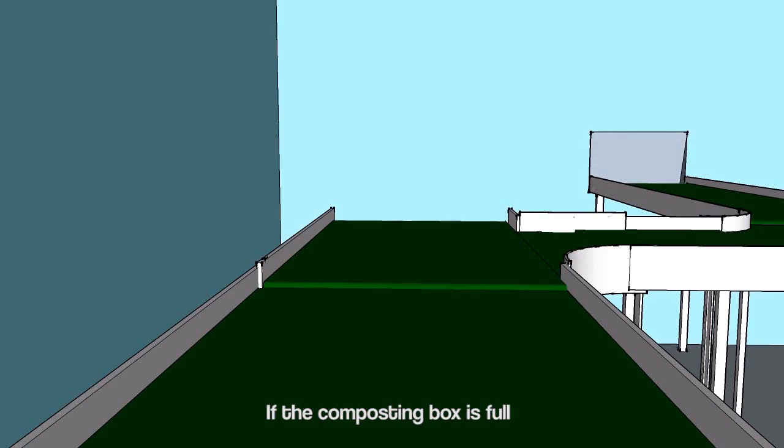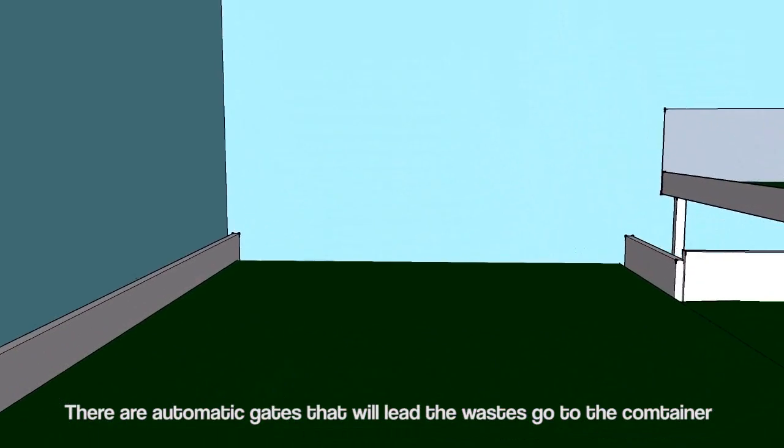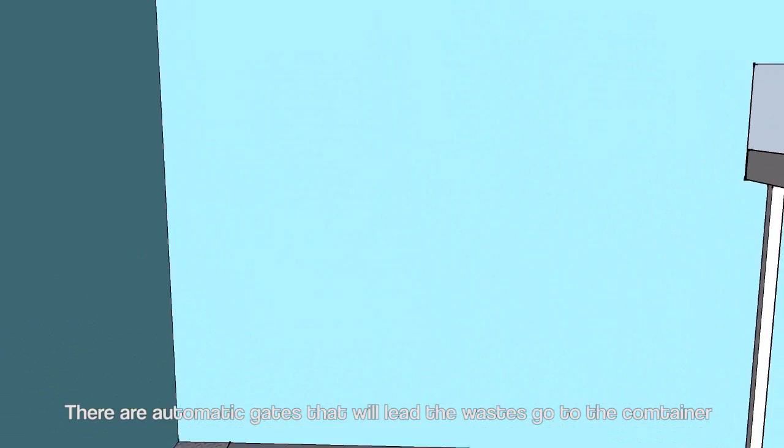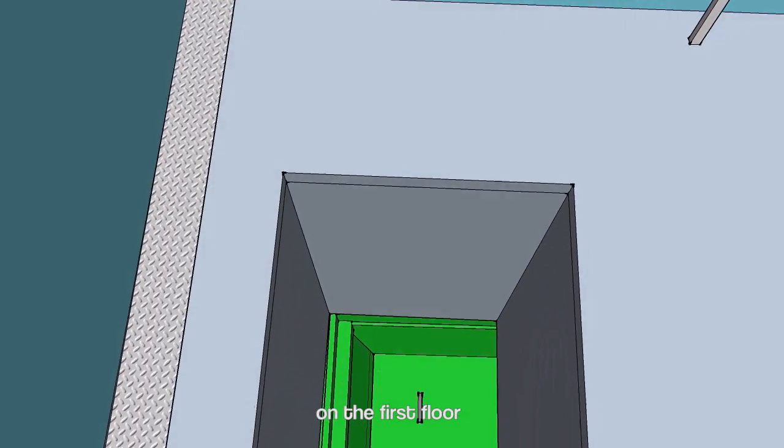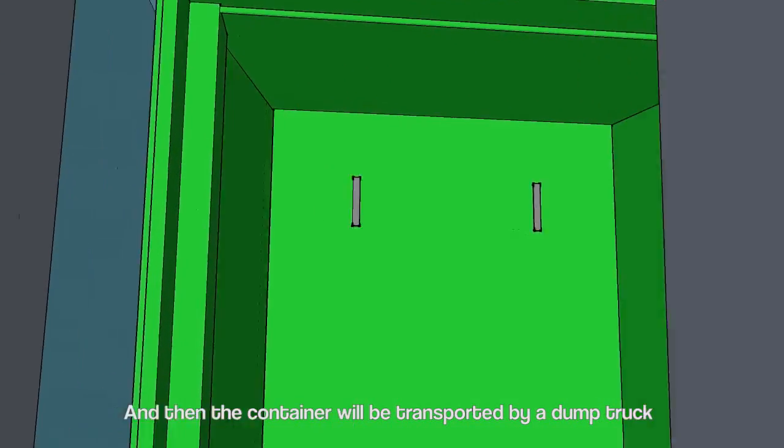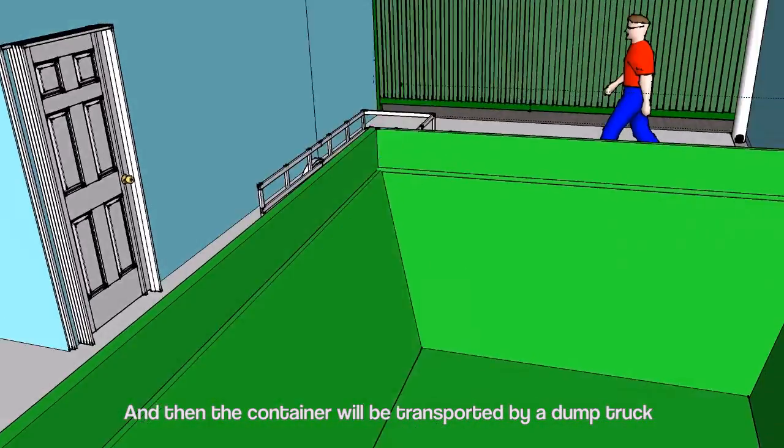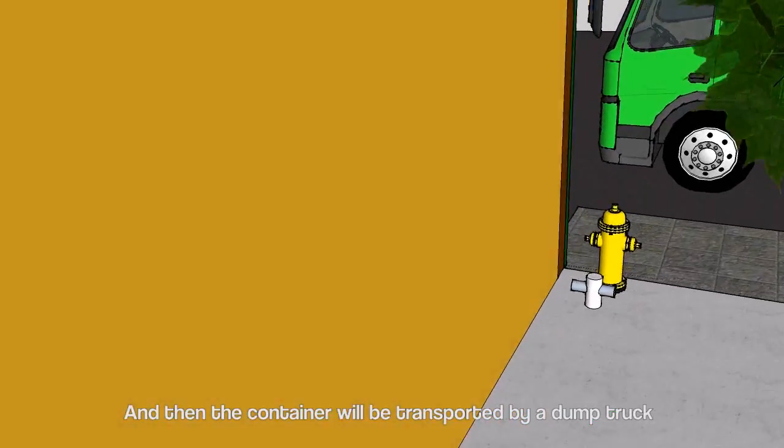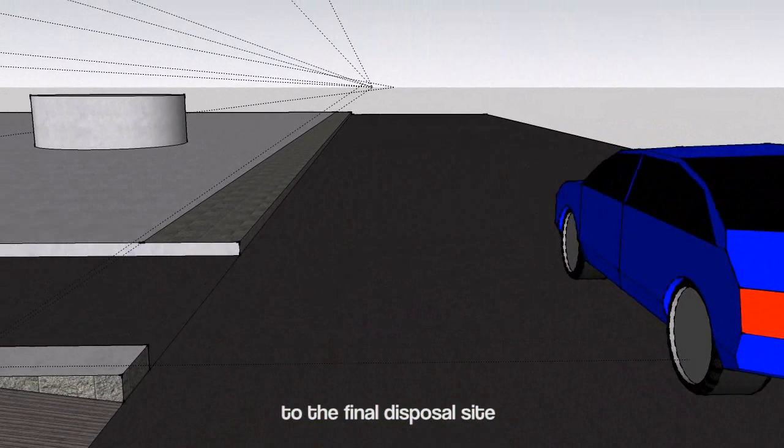If the composting box is full, there is an automatic gate that will lead the waste to go to the container on the first floor. Then the container will be transported by a dump truck to the final disposal site.